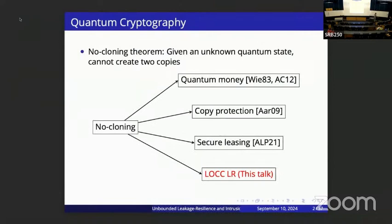One of the most basic principles in quantum mechanics is the no-cloning theorem: given an unknown quantum state, we cannot create two copies of it. This simple principle has many applications in quantum cryptography, like Wiesner's 1983 work introducing quantum money, and more advanced notions like copy protection and secure leasing, or so-called revocable crypto.